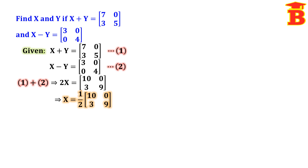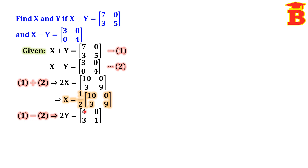For y, subtract the two equations so that x gets cancelled and we get 2y. The right-hand side requires subtracting corresponding elements: 7 minus 3 equals 4, 0 minus 0 equals 0, 3 minus 0 equals 3, and 5 minus 4 equals 1. So we get the matrix [4, 0; 3, 1].